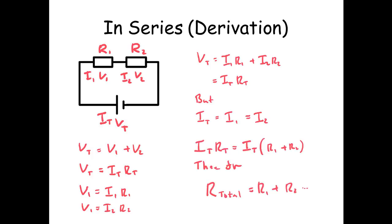So ItRT is equal to It brackets R1 plus R2. So the currents are the same on both sides so effectively they cancel. And that leaves us with R total, the total resistance is equal to R1 plus R2. And then carrying on if we had R3, R4, R5, just add them all together.